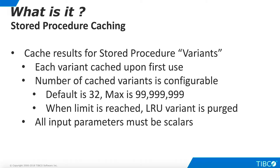The number of cached variants is configurable. The default is 32, but it may be set to any number up to 100 million minus 1. When the limit is reached, the least recently used variant is purged from the cache, and the new variant takes its place.